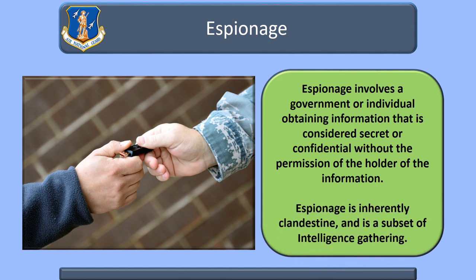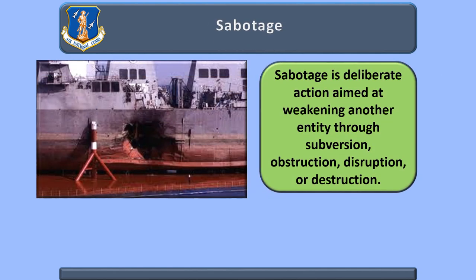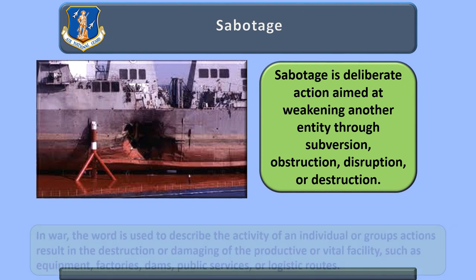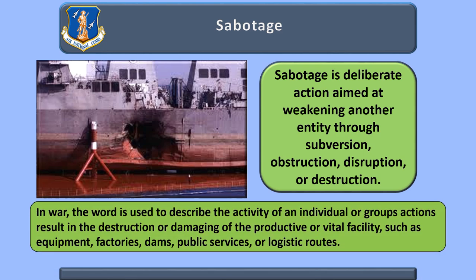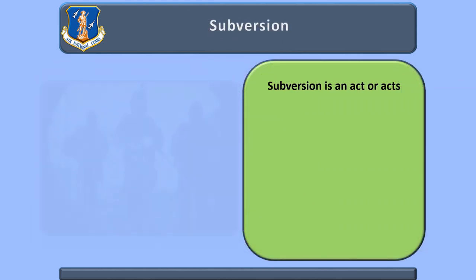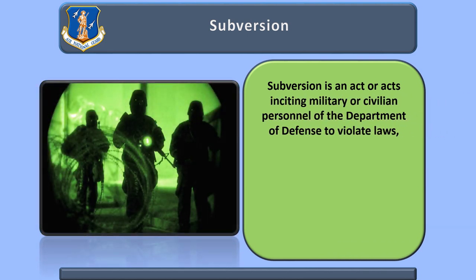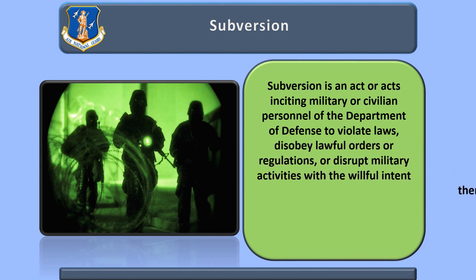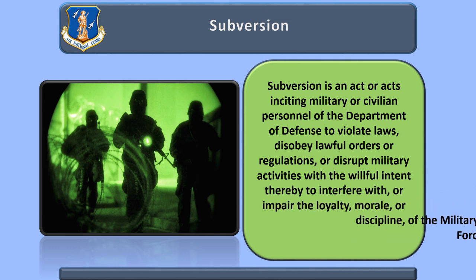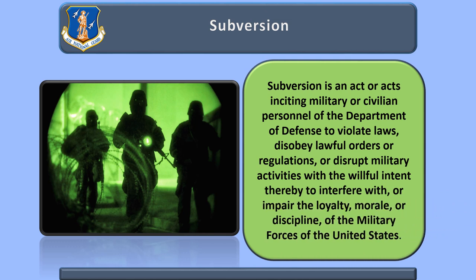Espionage is inherently clandestine and is a subset of intelligence gathering. Sabotage is a deliberate action aimed at weakening another entity through subversion, obstruction, disruption, or destruction. In war, the word is used to describe the activity of an individual or group's actions resulting in the destruction or damaging of a productive or vital facility such as equipment, factories, dams, public services, or logistic routes. Subversion is an act inciting military or civilian personnel of the Department of Defense to violate laws, disobey lawful orders or regulations, or disrupt military activities with the willful intent to interfere with or impair the loyalty, morale, or discipline of the military forces of the United States.